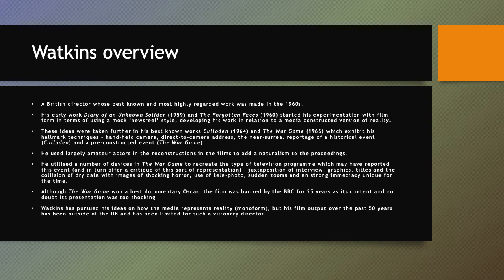Watkins always seeks a naturalistic construction: he used amateur actors in reconstructions to remove any sense of staginess or pretence. In The War Game he tries to recreate television programmes that may have reported on such an event, juxtaposing interviews, graphics, and titles on screen. He puts in really dry data — statistics and numbers — and places that against the horror and shock of physical injury within war, alongside sudden zooms. These films, made in the 1960s, have a striking realism and immediacy.